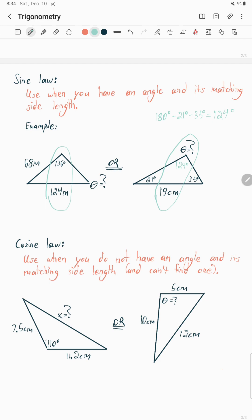Cosine law, you don't have a matching angle and side length. That's when you're going to use cosine law. So for all these triangles you see here, there's no matching angle and side length. That's cosine law.